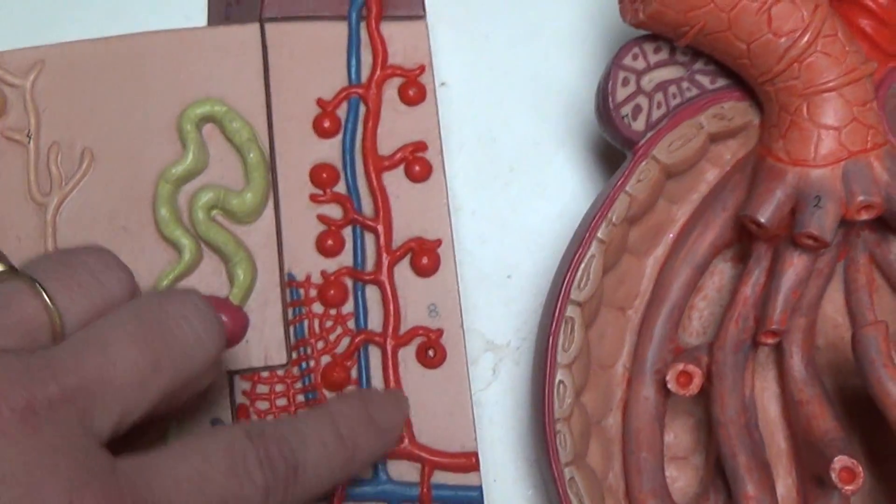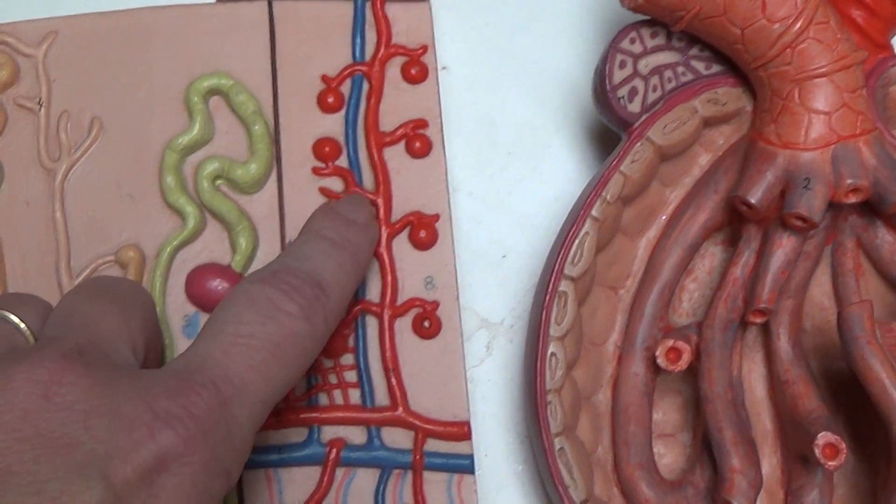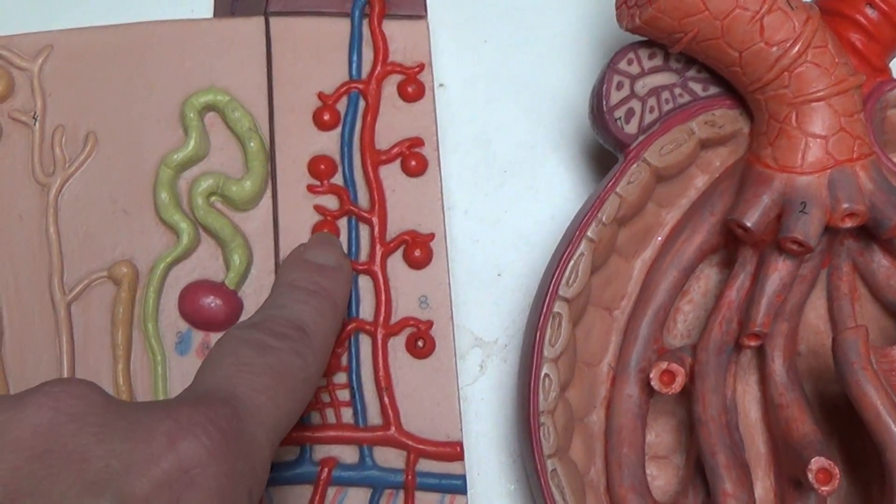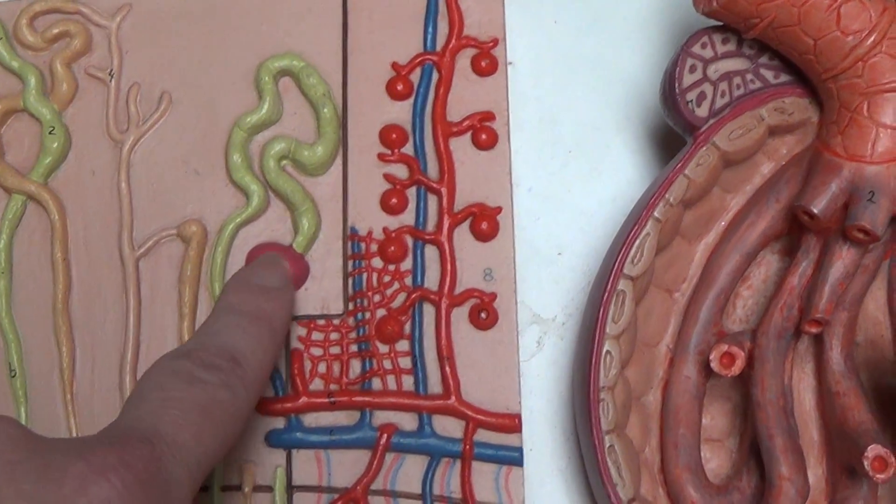This is a cortical radiate artery and vein. And off of those you have a blood vessel called the afferent arterial. And that is going to go to this round dot which is the glomerulus. It's the same thing that we see right here, the glomerulus.